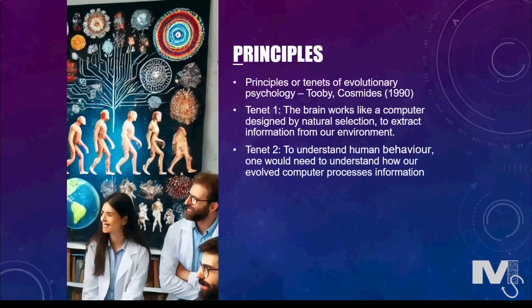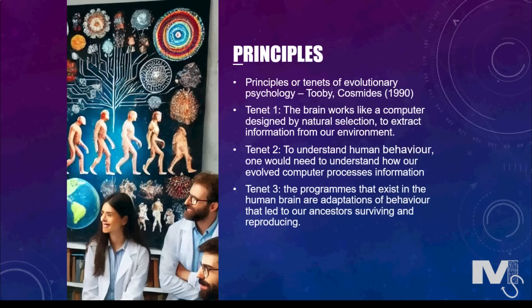Tenet 2 proposes that to understand human behaviour, one would need to understand how their evolved computer processes information and how their thought patterns work. Tenet 3 states that the cognitive programs that exist in the human brain are adaptations of the behaviour that successfully led to our ancestors surviving and reproducing.